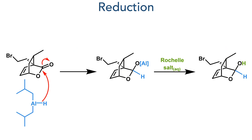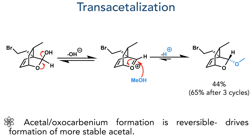This ester could then be reduced using DIBAL. The hydride adds to the ester forming an aluminium alkoxide complex. This was worked up using Rochelle's salt, which removes the aluminium and generates the target hemiacetal. This compound was not purified; instead the crude mixture was refluxed in chloroform with methanol to form the methyl acetal. The hemiacetal can eliminate hydroxide forming an oxocarbenium intermediate, which is then attacked by methanol forming the methyl acetal, which is more thermodynamically stable. This process was repeated three times, generating a 65% yield in total.